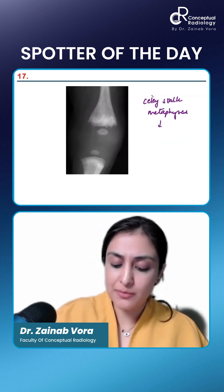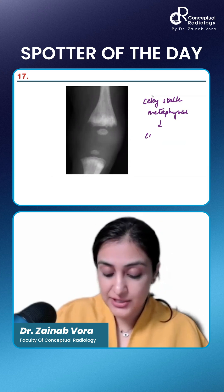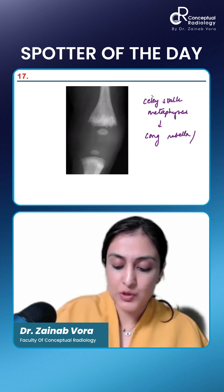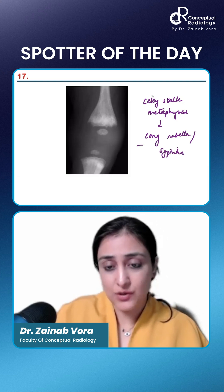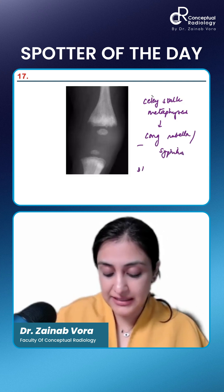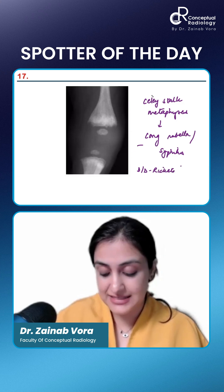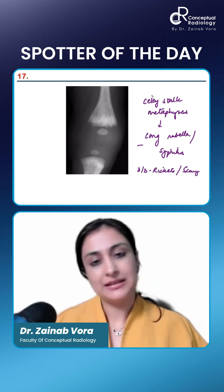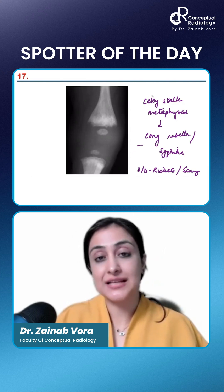Celery stalk metaphyses with the background of cataract — we want to think of congenital rubella. It may also be seen in congenital syphilis. The differential diagnosis here would be rickets, healing rickets because there is increased density, and scurvy also. So this is celery stalk.